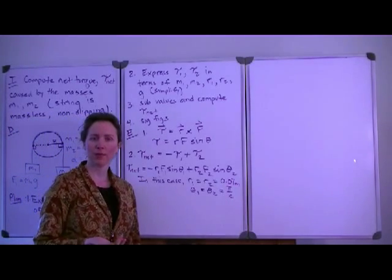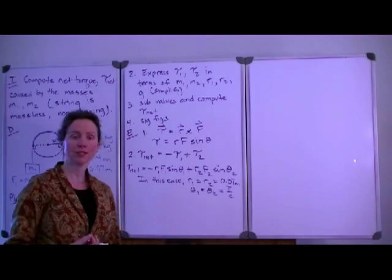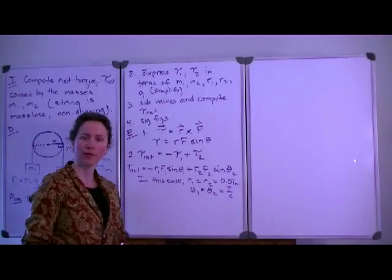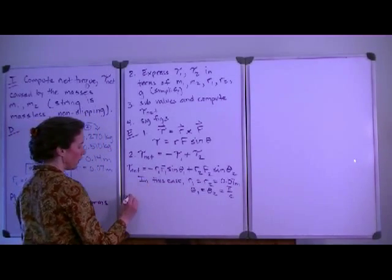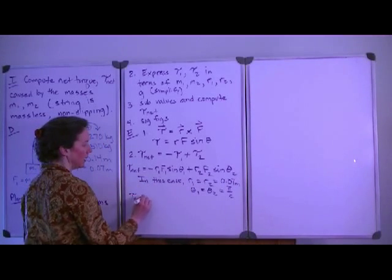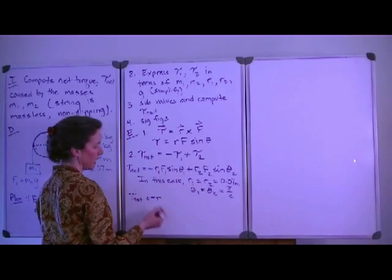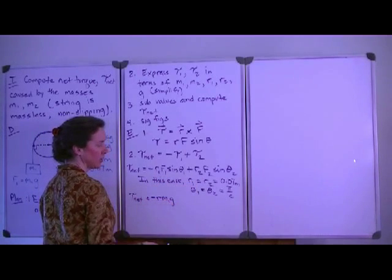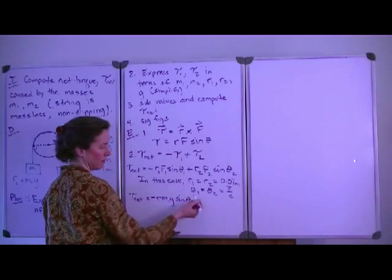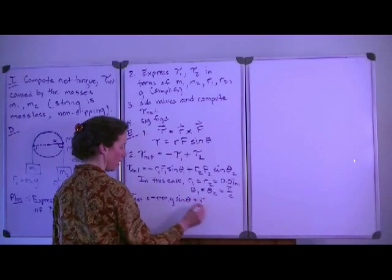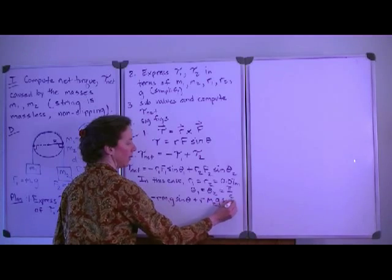I belabored this point a bit just because I want to simplify the mathematics later on. You would not get the wrong answer just by substituting each term, each value for each term individually and not consolidating. So we have tau_net is equal to minus R, because R1 and R2 are the same. We have mass 1 times gravitational acceleration times the sine of theta, which is equal for both terms, plus R times mass 2 times gravitational acceleration times sine theta.